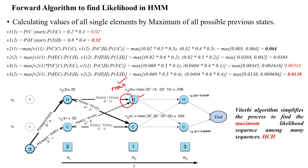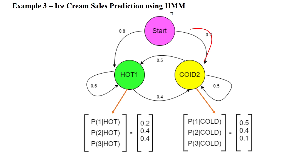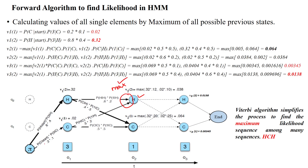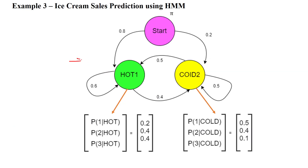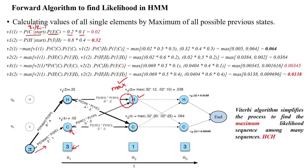From the initial state two transitions are possible — to the cold state or to the hot state. If we move to the cold state, the probability is P(cold|start). After reaching the cold state, the observation is 3 ice creams, so we need P(3|cold). P(3|cold) is 0.1, giving us the value 0.1 for that path.